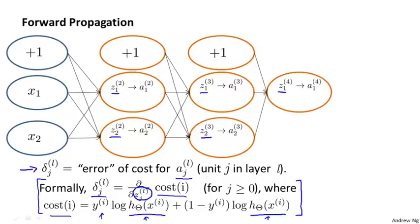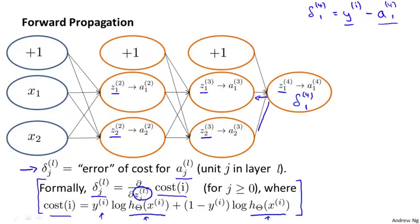Let's look in more detail at what backpropagation is doing. For the output layer, it first sets the delta term: delta(4, 1) equals yi minus a(4, 1), where we're doing forward propagation and backpropagation on training example i. So this is really the error — the difference between the actual value y and what was predicted. We compute delta(4, 1) like so. Next, we propagate these values backwards and end up computing the delta terms of the previous layer: delta(3, 1) and delta(3, 2).